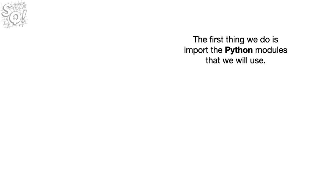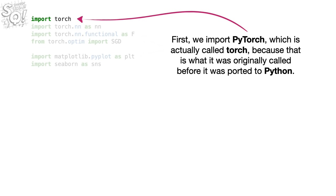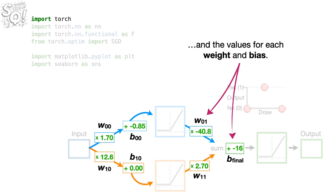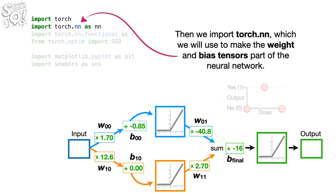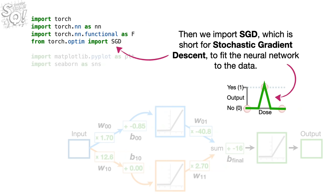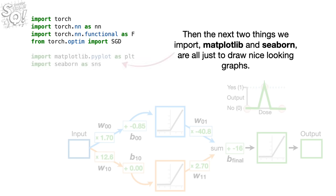The first thing we do is import the Python modules we will use. First, we import PyTorch, which is actually called Torch because that is what it was originally called before it was ported to Python. We'll use Torch to create tensors to store all numerical values, including the raw data and the values for each weight and bias. Then we import torch.nn to make the weight and bias tensors part of the neural network, torch.nn.functional for activation functions, and SGD — Stochastic Gradient Descent — to fit the neural network to the data. Matplotlib and Seaborn are imported just to draw nice-looking graphs.